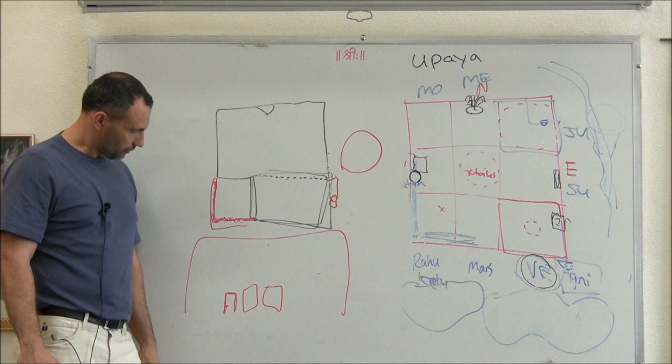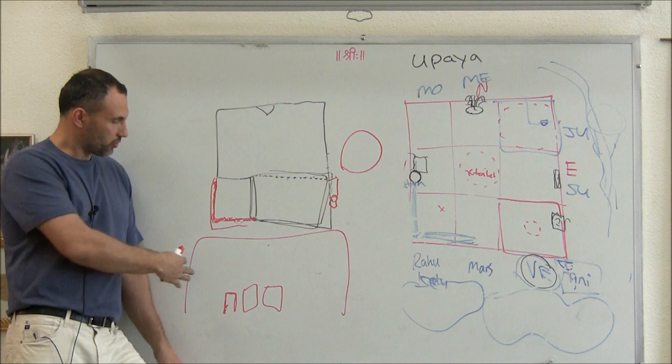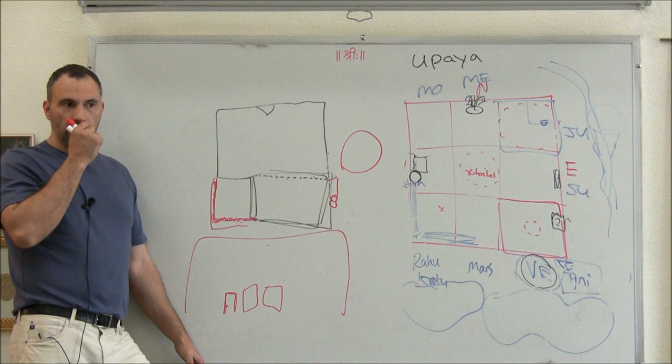A house like this, in which the windows are to the right side. Diane, as we walk into your house, are the windows to the right or to the left? All the windows are to the left, right? The windows to the left, correct.